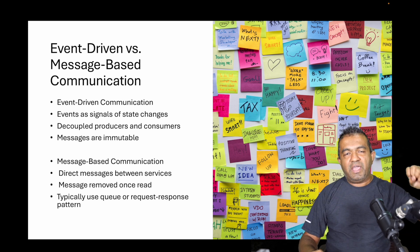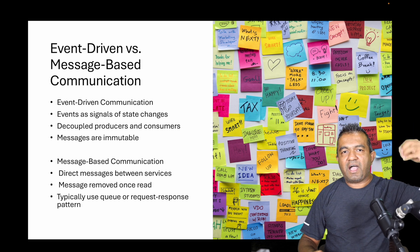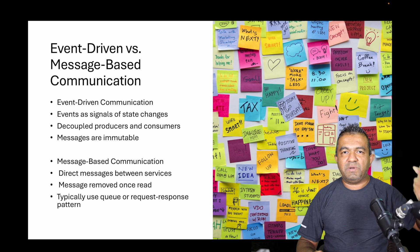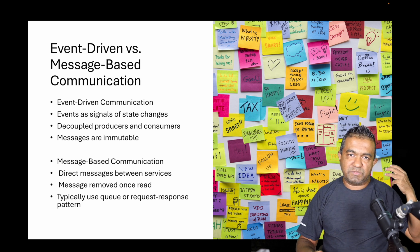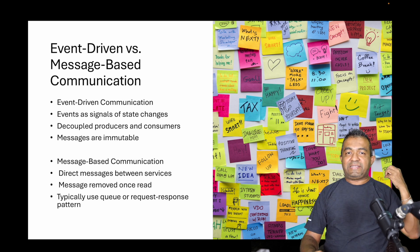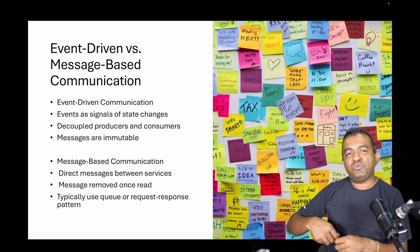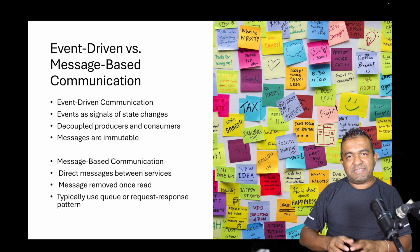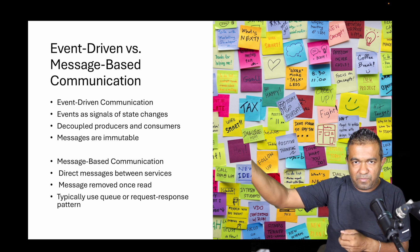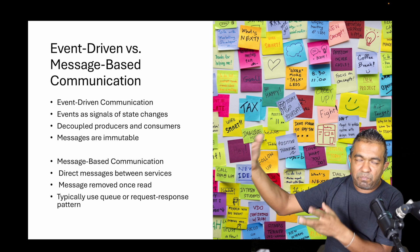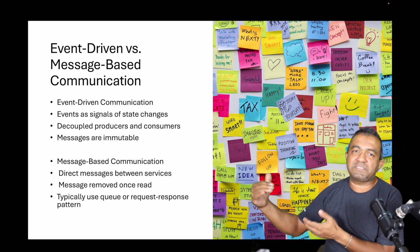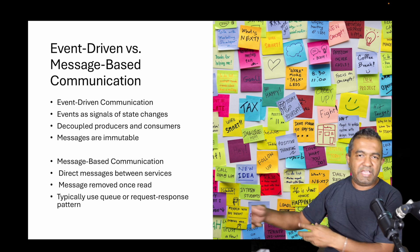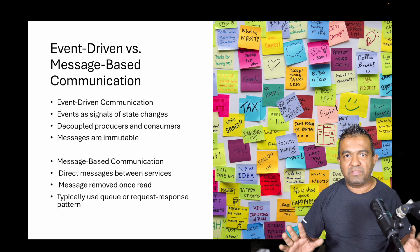Event-driven architecture means you emit an event after something has happened — someone logged into the system, someone enabled or disabled a record, someone created, updated, or deleted a record. After any state change, you emit an event to say 'this happened.' The important thing is that it has already happened — you are announcing an event. There may or may not be other services interested in this event. If they are interested, they will take it and do something; if they're not interested, it doesn't matter — you published the event.